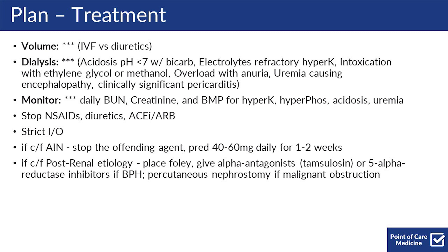For treatment, the things you should be thinking about is mostly volume — are you going to be diuresing the patient, or are you going to be giving them fluids? You should also be thinking about the need for dialysis. Reasons for emergent dialysis include acidosis with a pH less than 7 despite giving bicarb, electrolytes including refractory hyperkalemia, intoxication with ethylene glycol or methanol, overload with anuria and no ability to get fluid out otherwise, and uremia causing encephalopathy or clinically significant pericarditis.